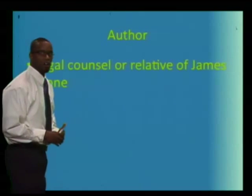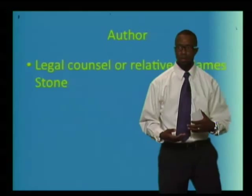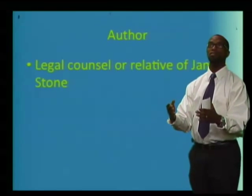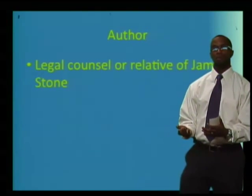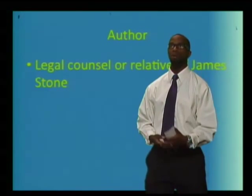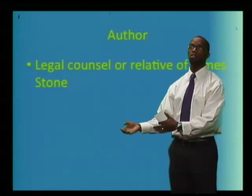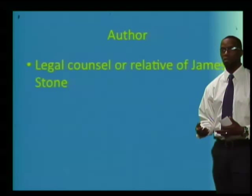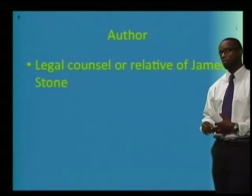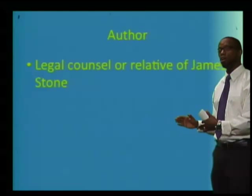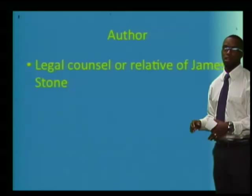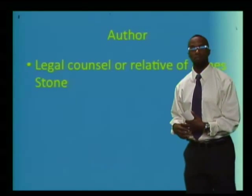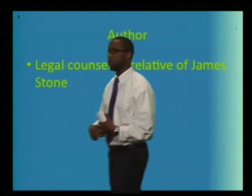So, the first A: author. An estate inventory is generally taken if someone is being audited for what they have, the possessions that they have, or upon someone's death — a list of things they're leaving behind as an inheritance. So the author of this document is probably not James Stone himself, as he's removed from it, either because he's being audited or very likely because he's deceased. It is legal counsel for Mr. James Stone, or a relative or associate, who is likely the author here.